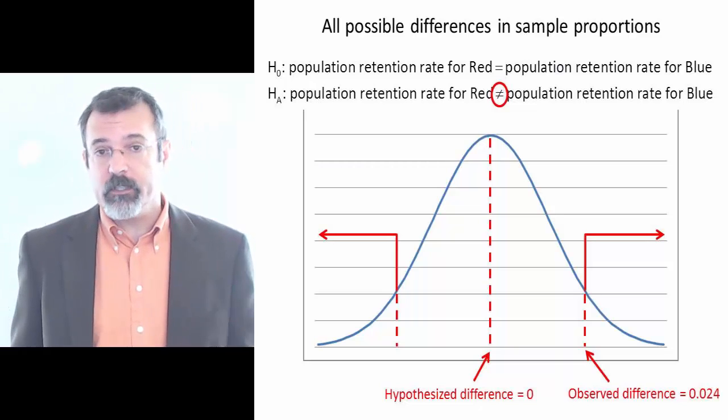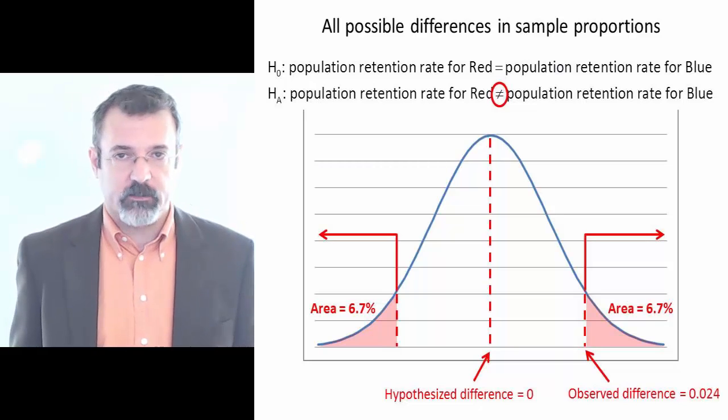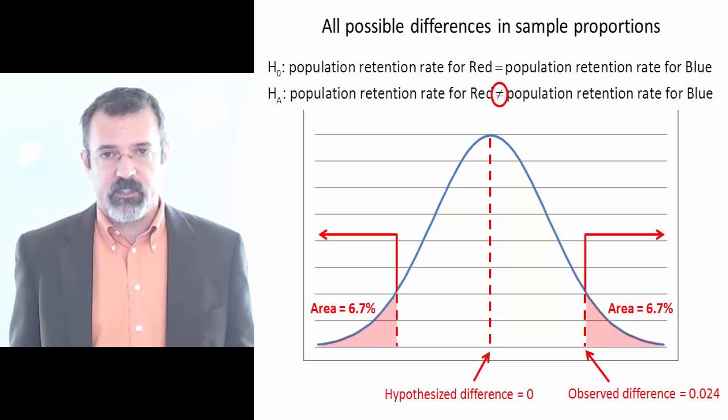Therefore, we're concerned with knowing the area from 0.024 up to the right and a similar area on the left. And we can find that these two areas are each 6.7%.